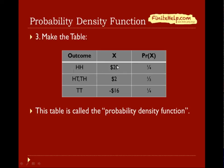So here again, we have Pr(X=$20) = 1/4, X=$2 is 1/2, and X=-$16 is 1/4. This table is called the probability density function.